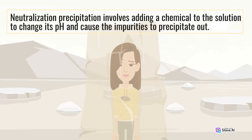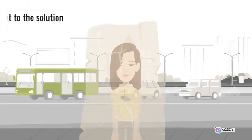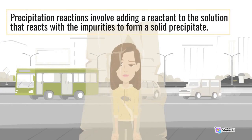Neutralization precipitation involves adding a chemical to the solution to change its pH and cause the impurities to precipitate out. Precipitation reactions involve adding a reactant to the solution that reacts with the impurities to form a solid precipitate.